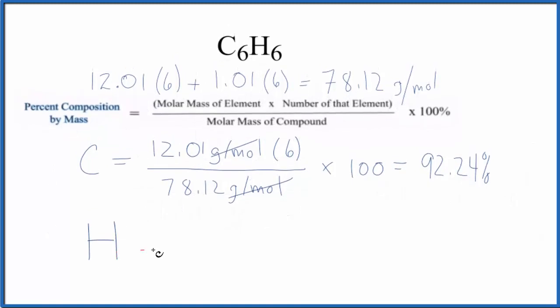Hydrogen on the periodic table is 1.01 grams per mole. The number of the elements, we have six hydrogen atoms. We divide it again by the molar mass of the compound, multiply by a hundred, and we end up with 7.76 percent for hydrogen in C6H6.